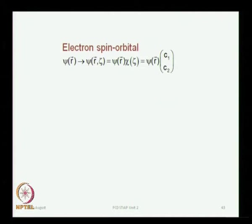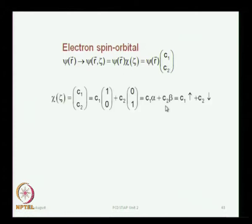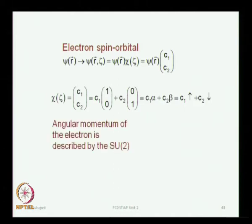We now pick up the discussion on the electron spin orbital, which has two states. You have the spatial coordinate r and spin coordinate ζ, written as a spin orbital with an orbital part and a spin part — sometimes called a spinor. This has two states represented by c₁ and c₂, the coefficients of the two pure states alpha (spin-up) and beta (spin-down). The angular momentum associated with spin rotation refers to SU(2) rather than SO(3).